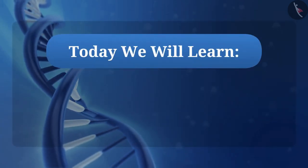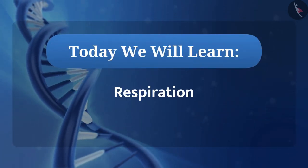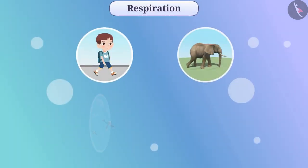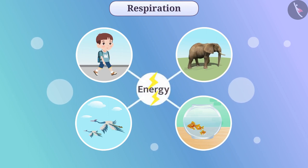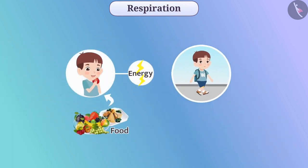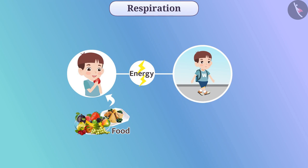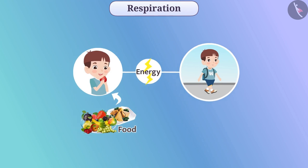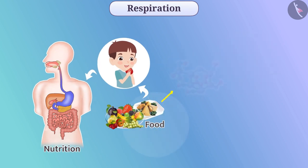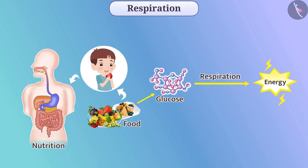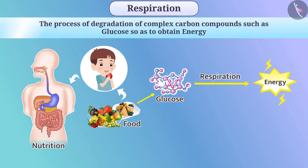Today we will learn about respiration. In the previous video, we learned that living beings need energy to do different tasks. This energy is obtained from food, and living beings obtain their food through the process of nutrition. For the production of energy from food, the process of respiration is important. The process of degradation of complex carbon compounds such as glucose so as to obtain energy is called respiration.